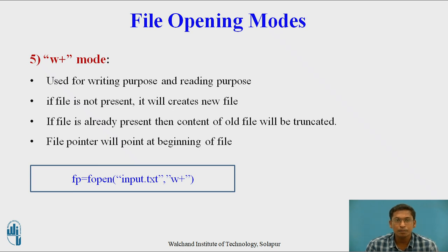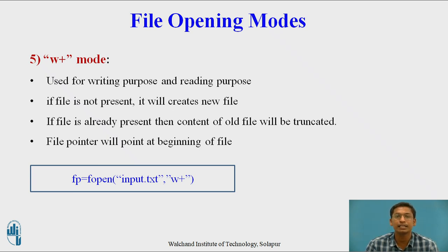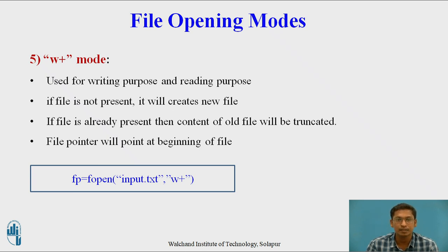The next mode is w+ mode, used for both writing and reading purpose, with the major purpose being writing. Reading is also possible with w+ mode. If the file is not present, it will create a new file. The difference between r+ and w+ is: in r+ it returns null if the file is absent, whereas in w+ it creates a new file. If the file is already present, the content of the old file will be truncated and deleted. The file pointer will point at the beginning of the file. Example: fp = fopen("input.txt", "w+").